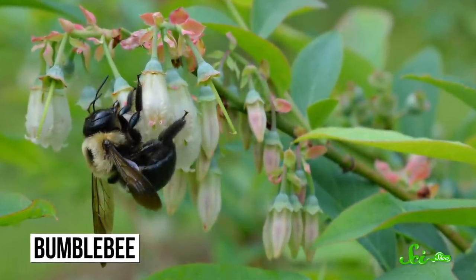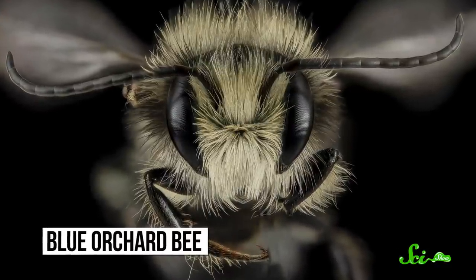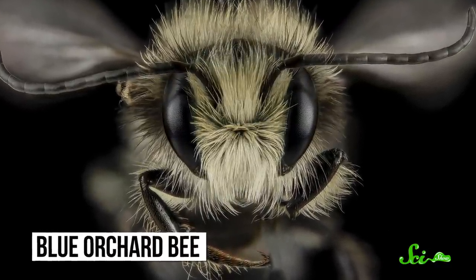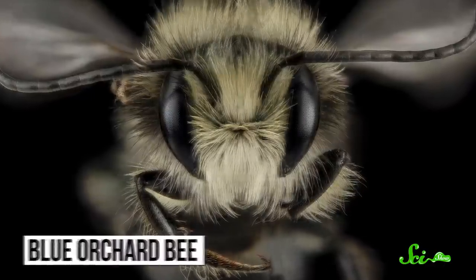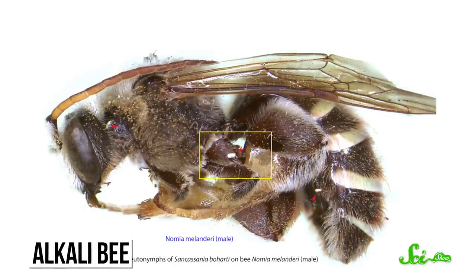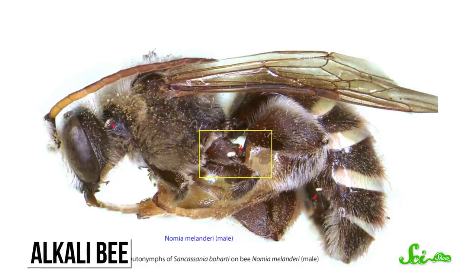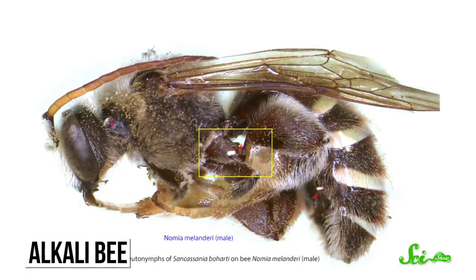In Florida, bumblebees could replace honeybees on blueberry farms. And the solitary blue orchard bee, which occurs throughout most of the United States and even as far north as Canada, could pollinate peaches, cherries, and almonds. And the alkali bee, another solitary species that's native to the western and southwestern United States, could pollinate onions.